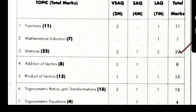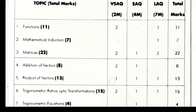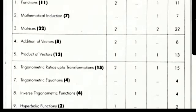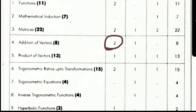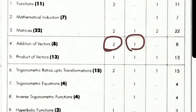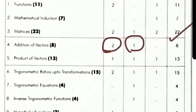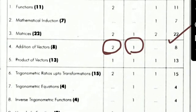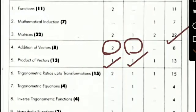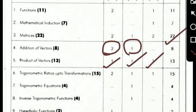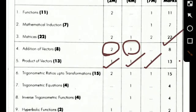Now coming to the next topic, Addition of Vectors. From Addition of Vectors, 2 two-marks questions, 1 four-marks question. 4 plus 4, total 8 marks. Next topic, Product of Vectors: 1 two-marks question, 1 four-marks question, 1 seven-marks question. Total, it has 13 marks.